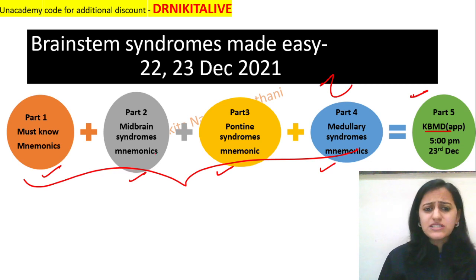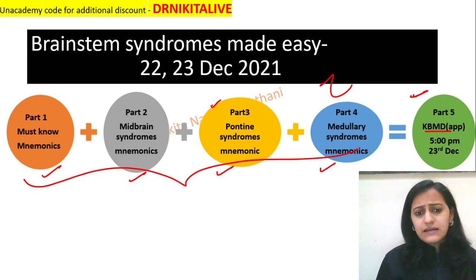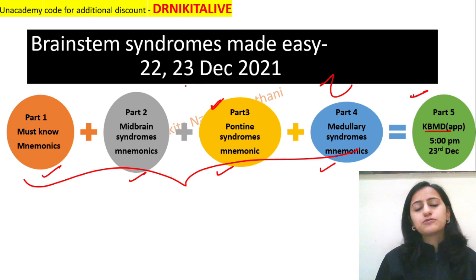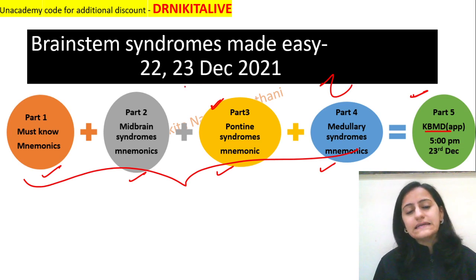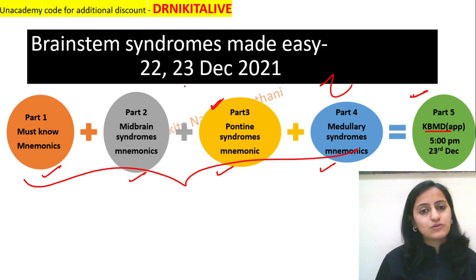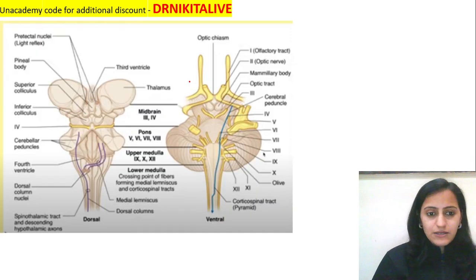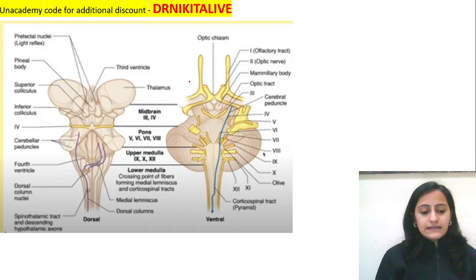This is part three where we are going to discuss the pontine syndromes: Miller-Gubler, Foville, Raymond syndrome, Locked-in syndrome, facial colliculus and all of that. So let's start with that.